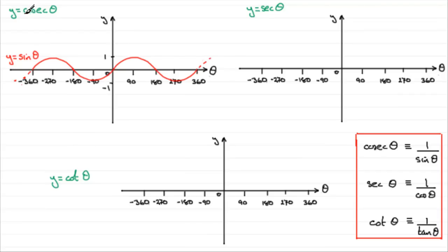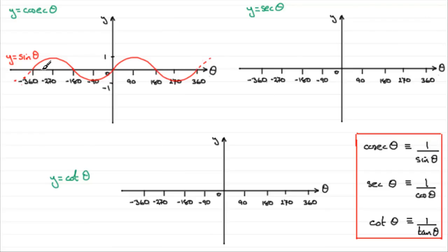Now, when it comes to drawing cosec theta, knowing that cosec theta is 1 divided by sine theta, funny things are going to happen. Because we're going to be dividing by 0 quite often — look at 0, 180, 360, and down here at minus 180, minus 360. And you should know that 1 divided by 0 is an undefined value; you get an error on your calculator. So what that means is we get asymptotes at these key points where we're dividing by 0. This is a point that's going to echo through all of these graphs, so it's well worth noting.